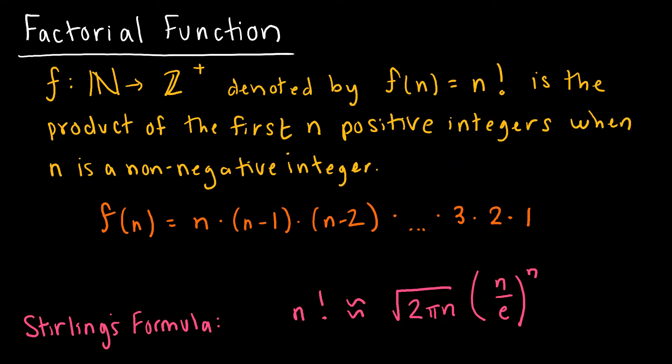And I am certain, absolutely certain, that you have had the factorial function before. Factorial function is essentially denoted by f of n equals n factorial. That's the exclamation point, which means factorial. And it is the product of the first n positive integers when n is a non-negative integer.